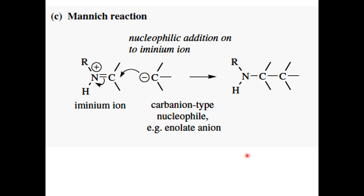The second general reaction for alkaloid biosynthesis is the Mannich-type reaction. The Mannich reaction is one mechanism for carbon-carbon bond formation. A previous reaction we also discussed for carbon-carbon bond formation is the aldol reaction. The Mannich reaction occurs when a Schiff base is attacked by an electron-rich carbon, forming a carbon-carbon bond. This is a very important reaction in alkaloid biosynthesis.